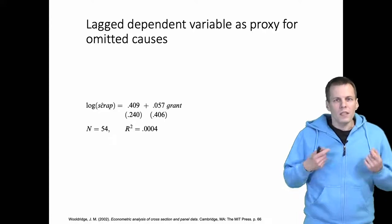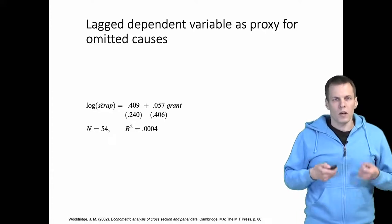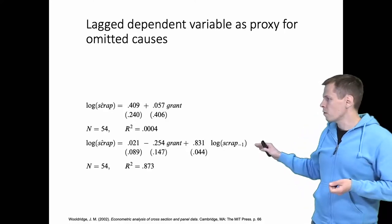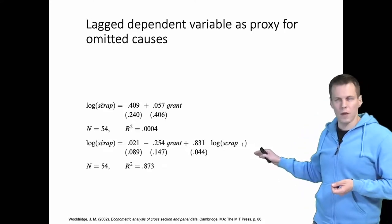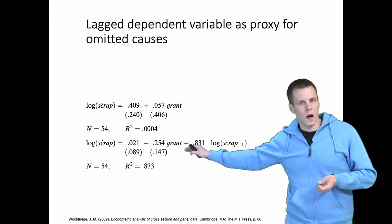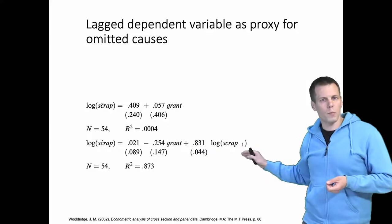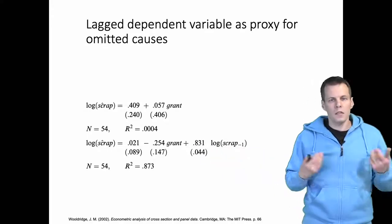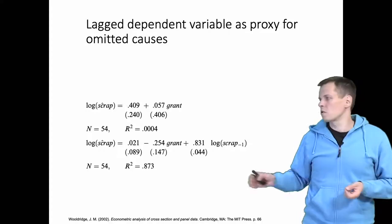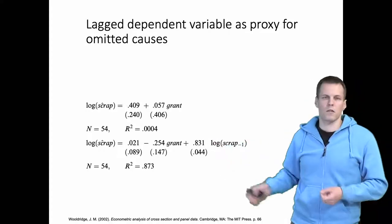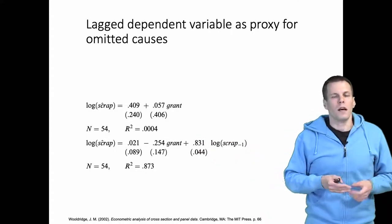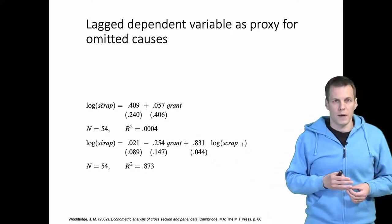We can deal with this by including a lag dependent variable. We take the amount of scrap from the previous time period, and regress the current amount of scrap on the previous value and the grant. This shows that after controlling for previous values, the effect of grant is actually negative — not statistically significant, but negative, which is the direction we expected.